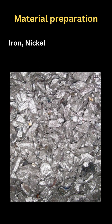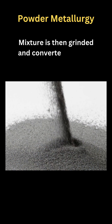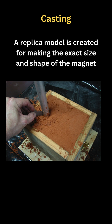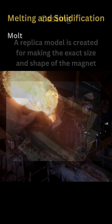In the first step, iron, nickel, and cobalt are cut into smaller chips and mixed together. Further, the mixture is ground into powder form. Then a replica of the exact size and shape of the desired magnet is prepared, which is called a cast.